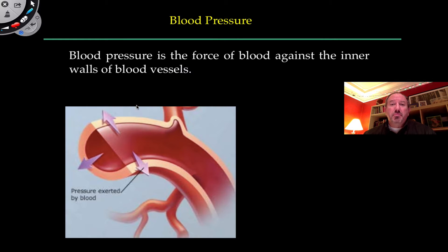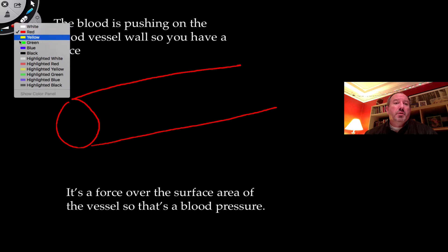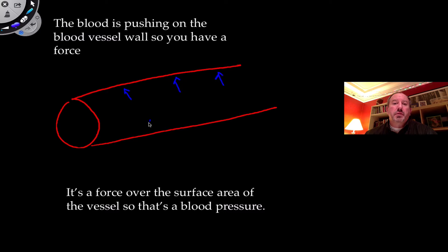Blood pressure is simply a force being exerted on the wall of a blood vessel. As you can see, when blood flows through a particular vessel, it pushes out on the wall. The plasma, the liquid, the cells, and all of that is creating a force, and that force against the wall of the blood vessel is causing the pressure. Blood is pushing on the vessel wall, and so it's as simple as the force over the surface area of the vessel — that's the definition of blood pressure.